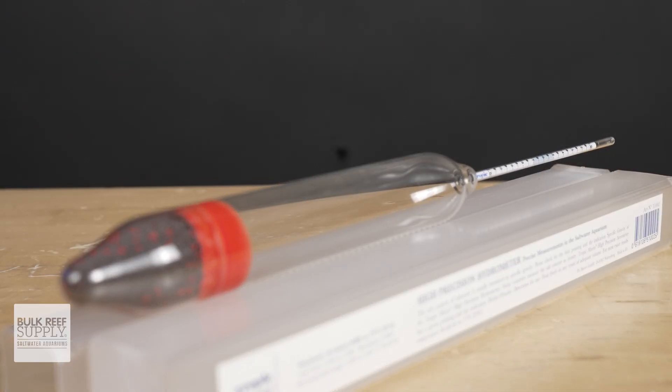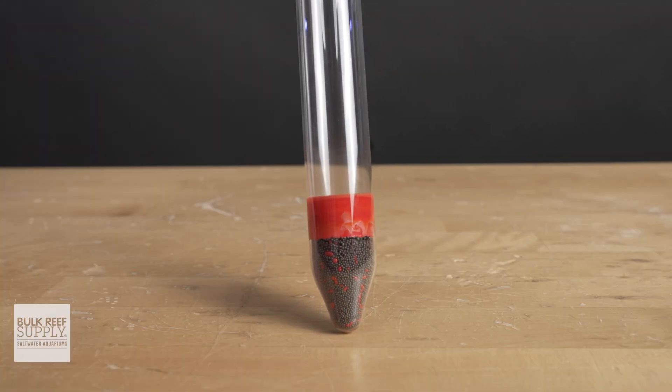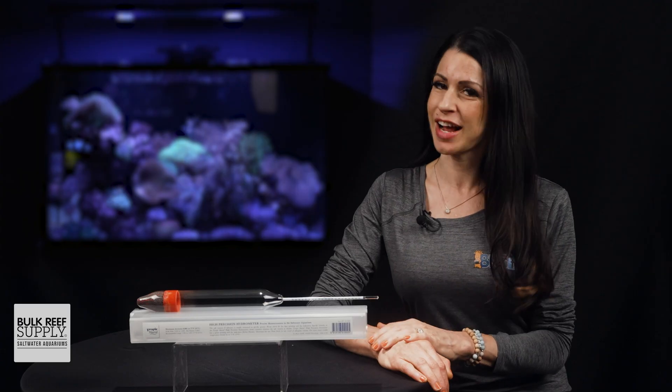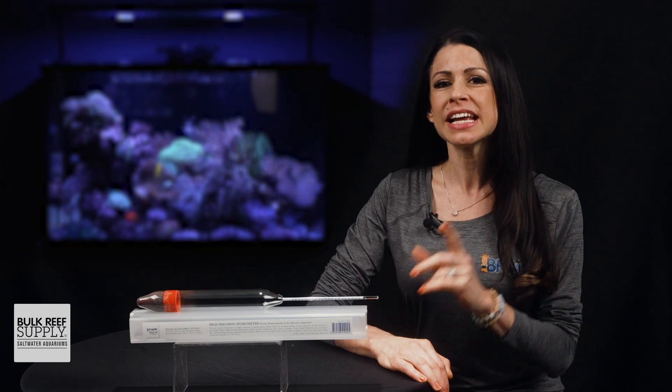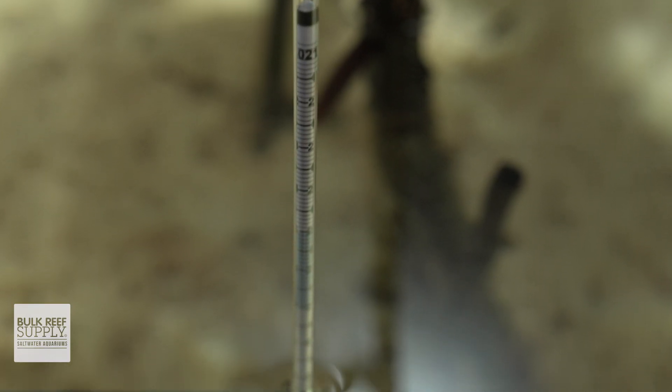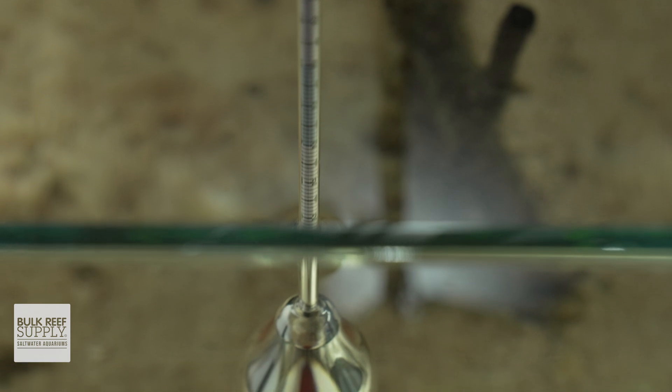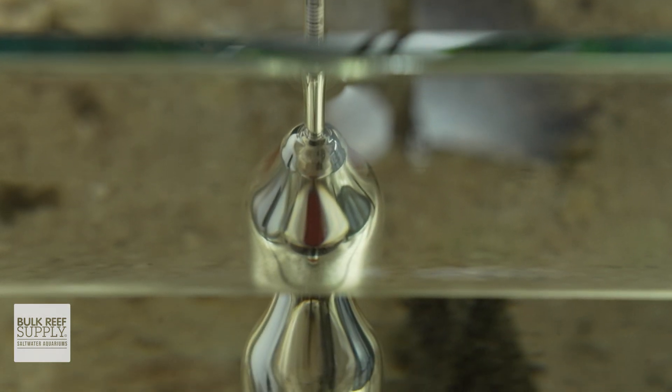What makes this hydrometer great? Each unit is hand-blown and calibrated. Fragile, yes, but accurate, absolutely. As I mentioned before, it never needs to be calibrated, and it reads specific gravity from 1.021 to 1.031, which converts to 29 to 39 parts per thousand.